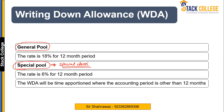If an asset falls under the main pool, the Written Down Allowance is available at a rate of 18% for a 12-month accounting period. If the accounting period is less than or more than 12 months, this percentage is time-apportioned. Similarly, if an asset falls under the special rate pool, the rate is reduced to 6% for a 12-month accounting period, and it will similarly be time-apportioned.